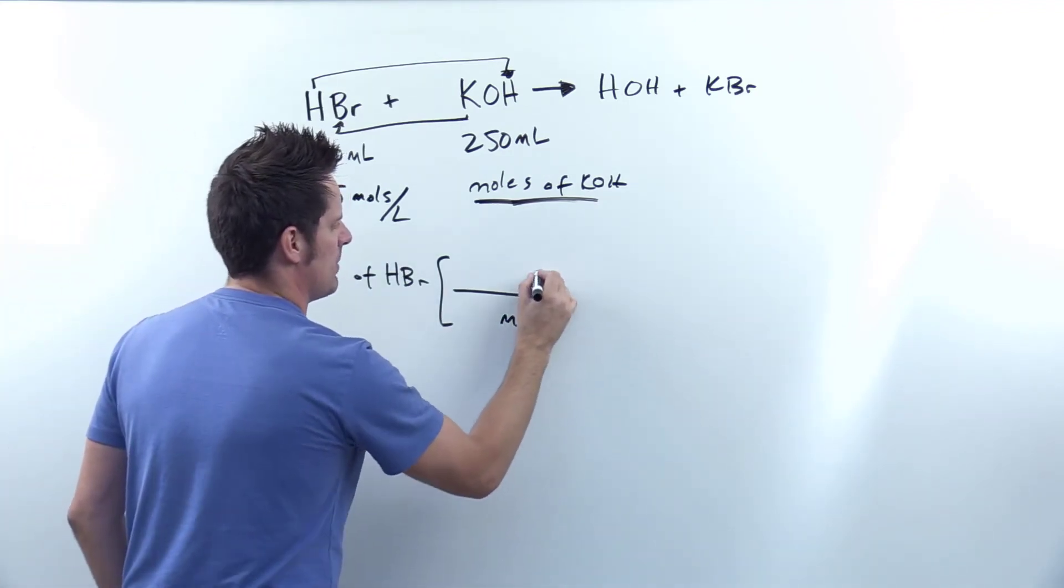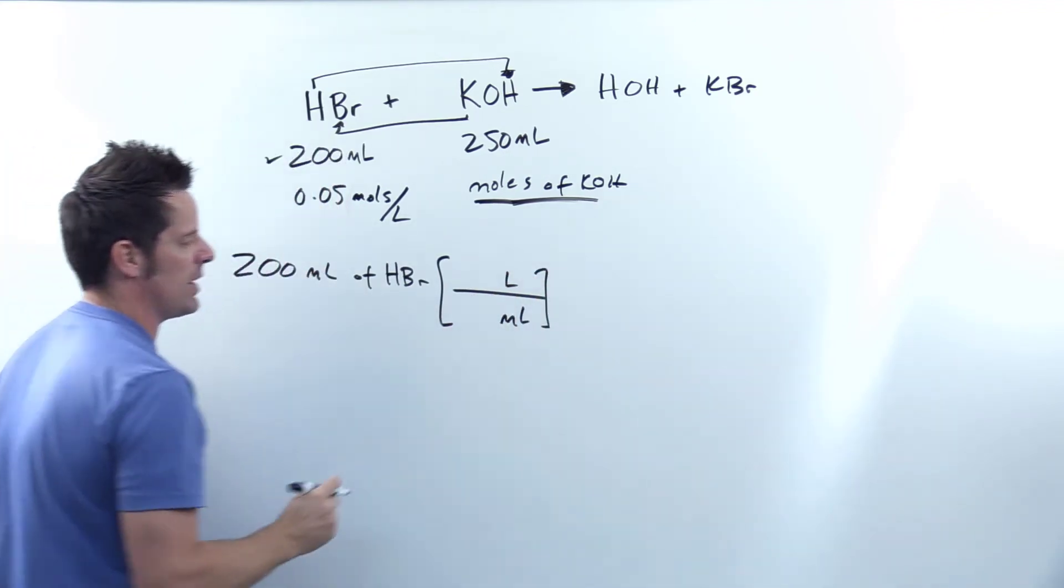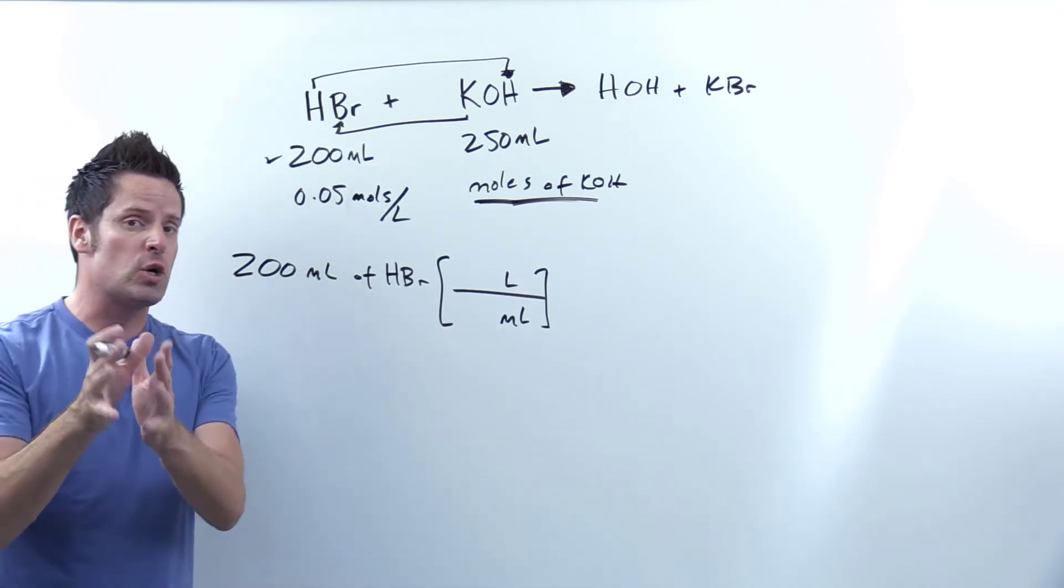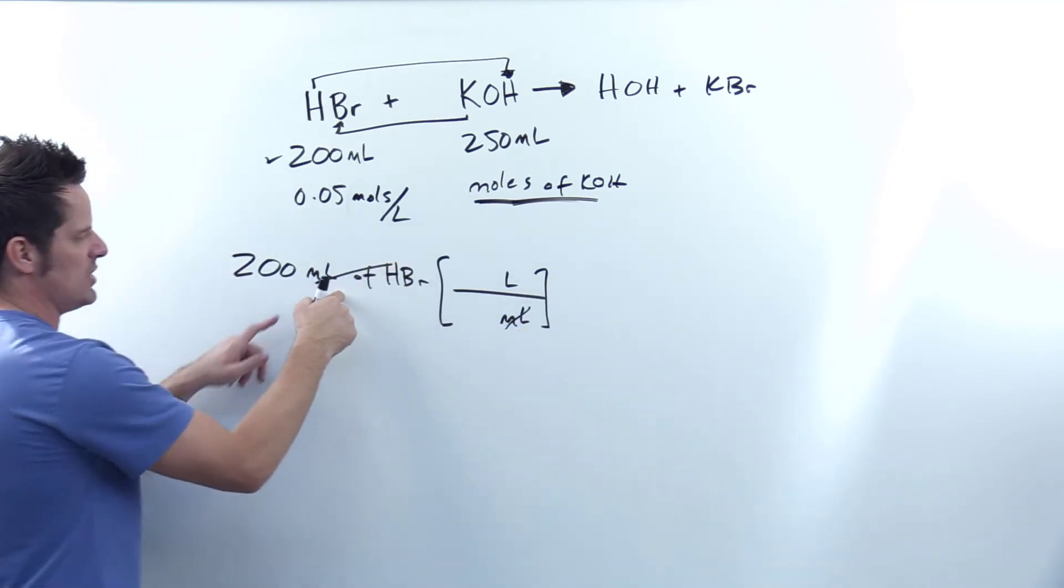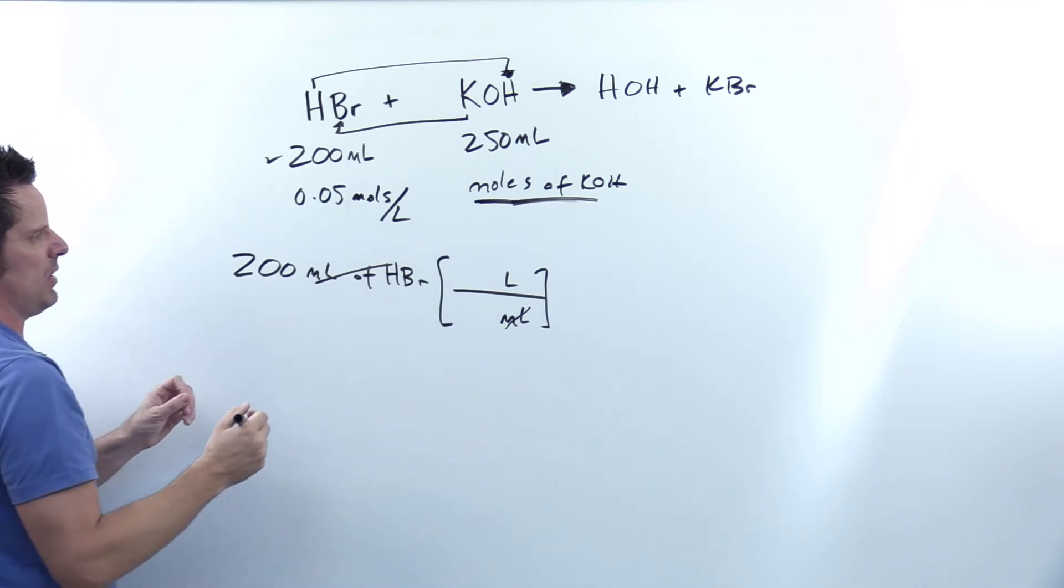So I'm going to write down milliliters in the denominator here and liters in the numerator, because milliliters and liters are directly relatable. I'll cancel out milliliters here of HBr, get to liters of HBr.